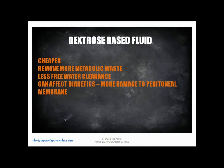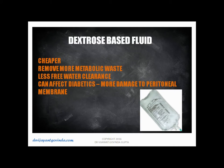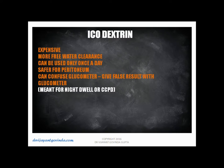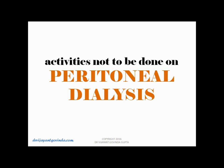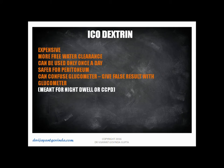What are the types of peritoneal dialysis fluid? The first are dextrose-based fluids, which are cheaper and remove more metabolic waste than water. However, in diabetic patients they can create problems by providing excess sugar, or they may damage the peritoneal membrane over time, leading to failure of dialysis. A better option today is icodextrin. These fluids are expensive, remove more water, but can only be used once a day. Importantly, icodextrin — though not a sugar — can cause false readings in glucometers, so specially designed glucometers are indicated. Icodextrin-based solutions are mostly meant for night use or in CCPD.